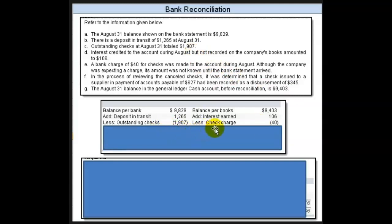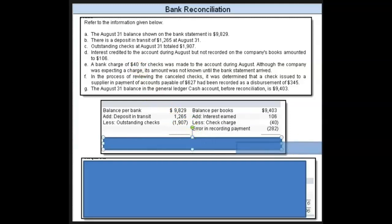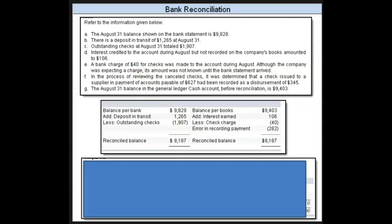There was a check charge of $40 that the bank knew about but we didn't. The only thing left is the error in the recording amount, and that's on our side — the bank processed it correctly, but we recorded it wrong. So we compute the difference between the $625 and the $345 and record it correctly. When we're done, we have a reconciled balance on both sides, and they should match if we've done this correctly.